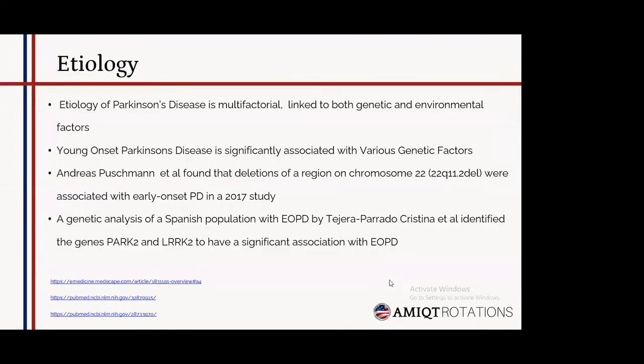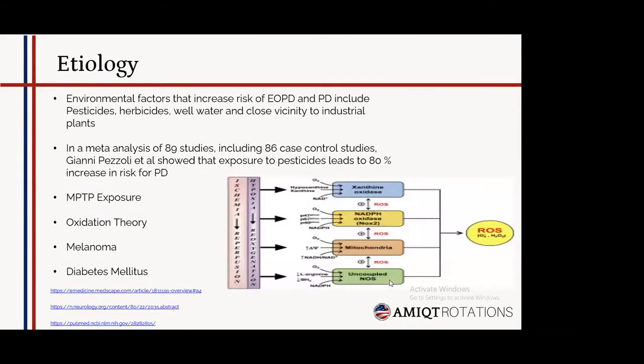The etiology of Parkinson's disease is multifactorial, linked to both genetic and environmental factors. Young onset Parkinson's disease is significantly associated with various genetic factors. Pushman et al. found that deletions on chromosome 22 were associated with early onset Parkinson's disease in a 2017 study. A genetic analysis of a Spanish population with EOPD by Tejera-Prado Cristina et al. identified genes PARK2 and LRRK2 as having significant association with EOPD. Environmental risk factors include pesticides, herbicides, well water, and close vicinity to industrial plants. A meta-analysis of around 89 studies by Gianni Pizzoli et al. showed pesticide exposure leads to an 80% increased risk for Parkinson's disease.